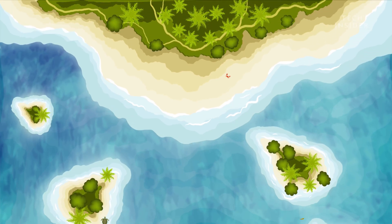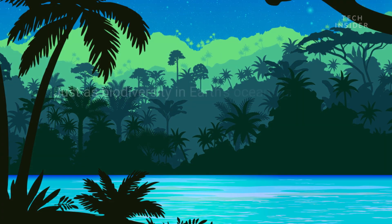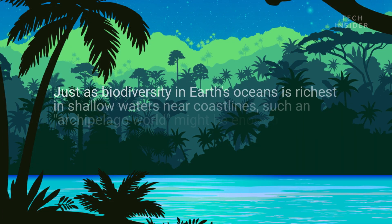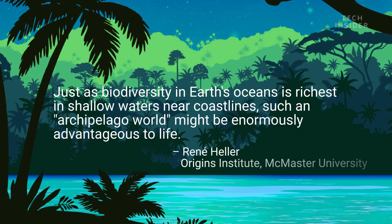Those, in turn, could be the perfect place for life to form and evolve. Just as biodiversity in Earth's oceans is richest in shallow waters near coastlines, such an archipelago world might be enormously advantageous to life. There's just one problem.